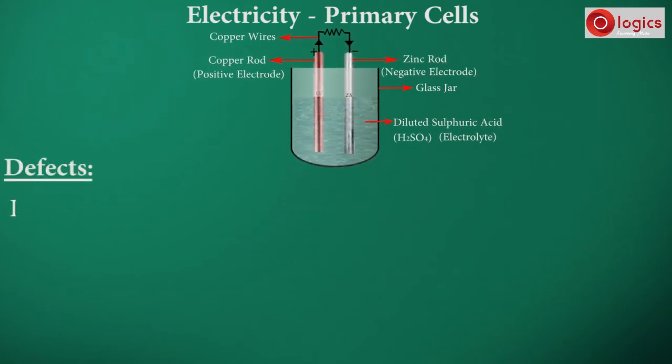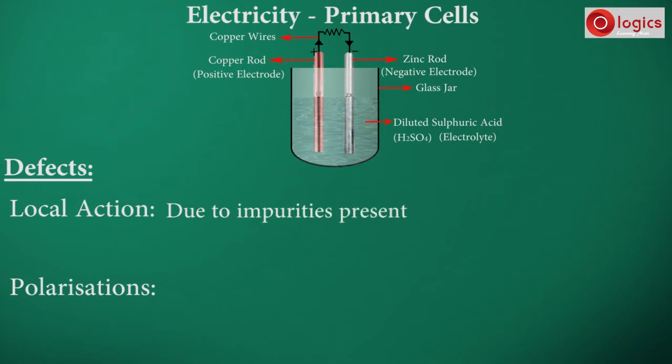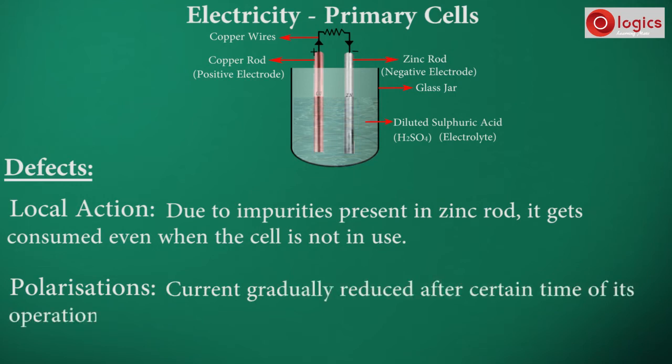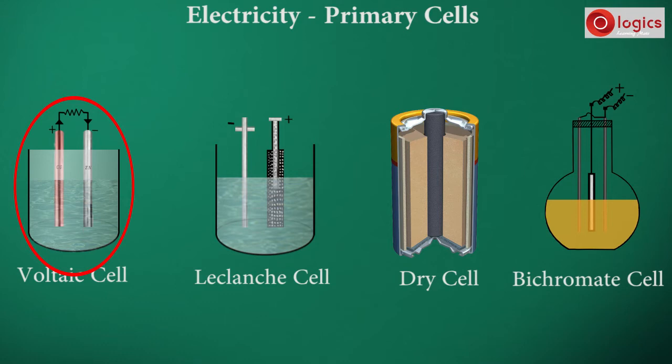The defects are local action and polarization. Local action means due to impurities present in zinc rod, it gets consumed even when the cell is not in use. Polarization means current gradually reduces after certain time of its operation, due to undesired chemical reactions. The voltaic cell defects are local action and polarization.